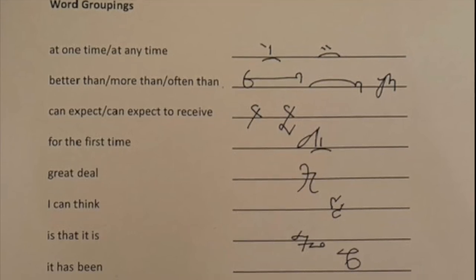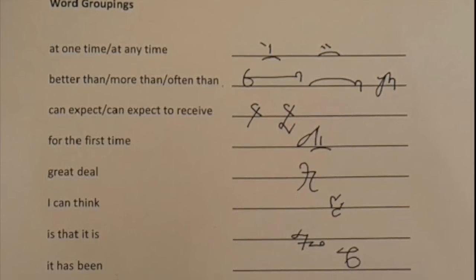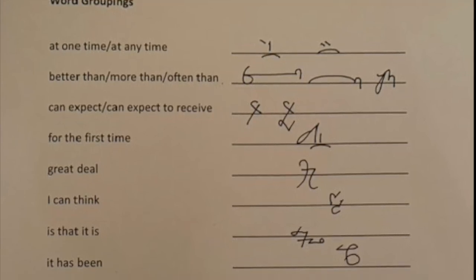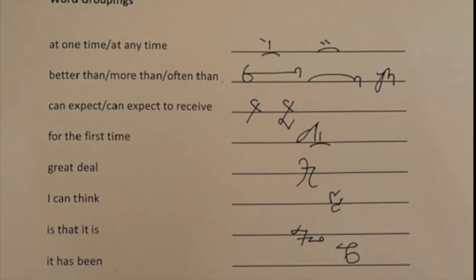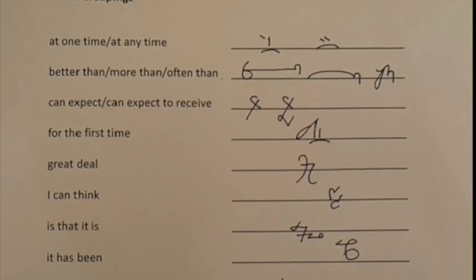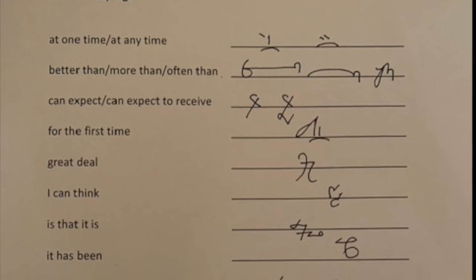But I have included next to it, AT ANY TIME, so that you can see how important it is that the one looks like a one and is upright. Otherwise it would look like AT ANY TIME, which is an AT, an A for any, and the M underneath the time.